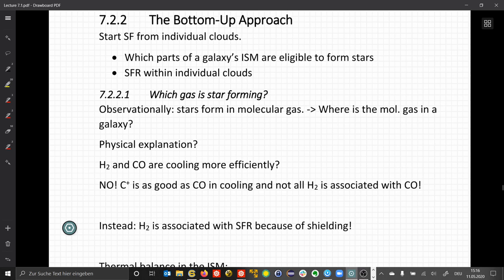So maybe it's because H2 and CO are cooling more efficiently. First of all, H2 is cooling very inefficiently, and CO is cooling very efficiently, but this can't be the reason, because even C+, that occurs where CO has not yet formed, is very good in cooling the gas. We don't need the very dense molecular gas. We can stay in the atomic gas where we have a lot of C+ and still sufficiently cool the clouds to actually form higher masses before they become unstable. Instead, it turns out that H2 is associated with the star formation because of shielding.